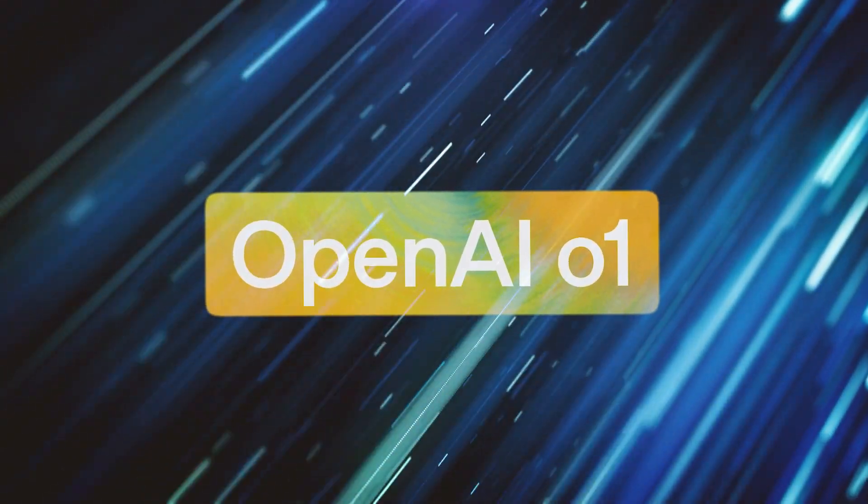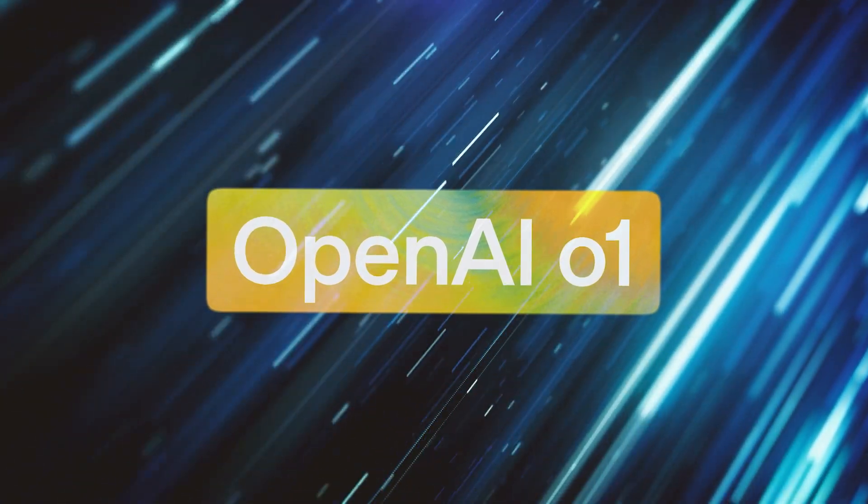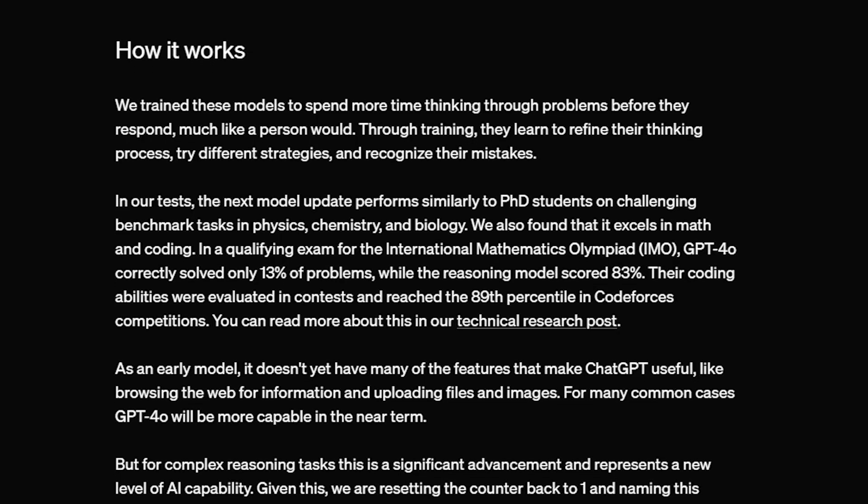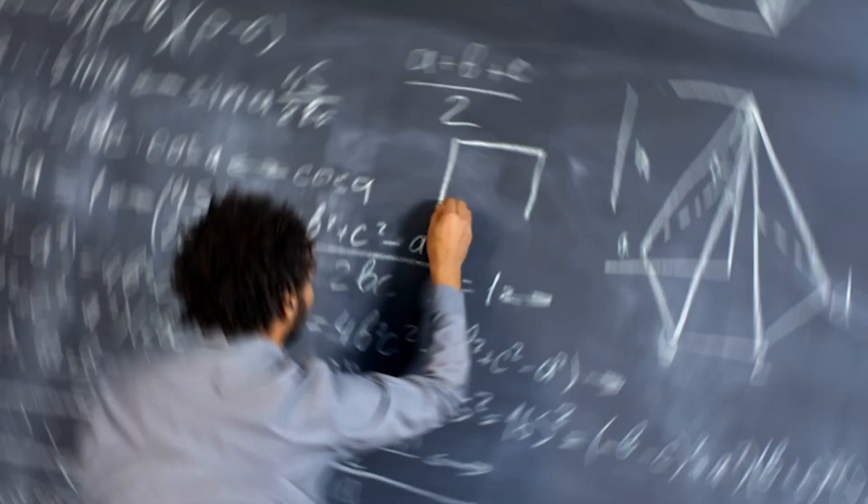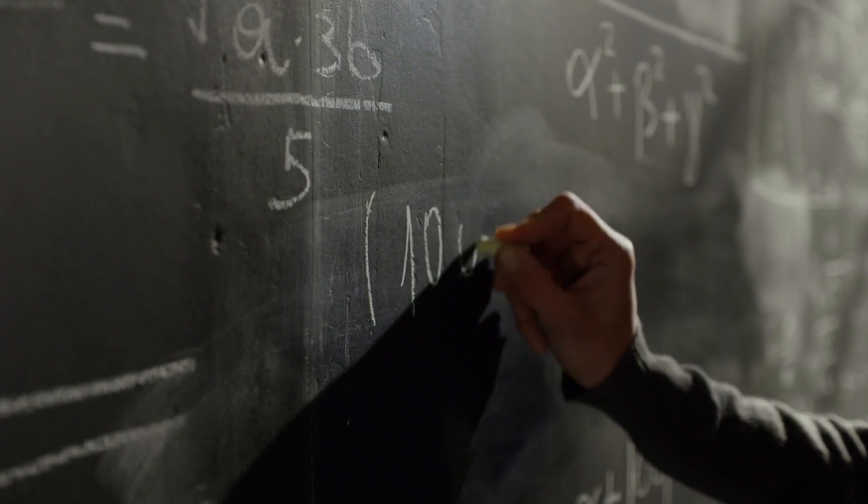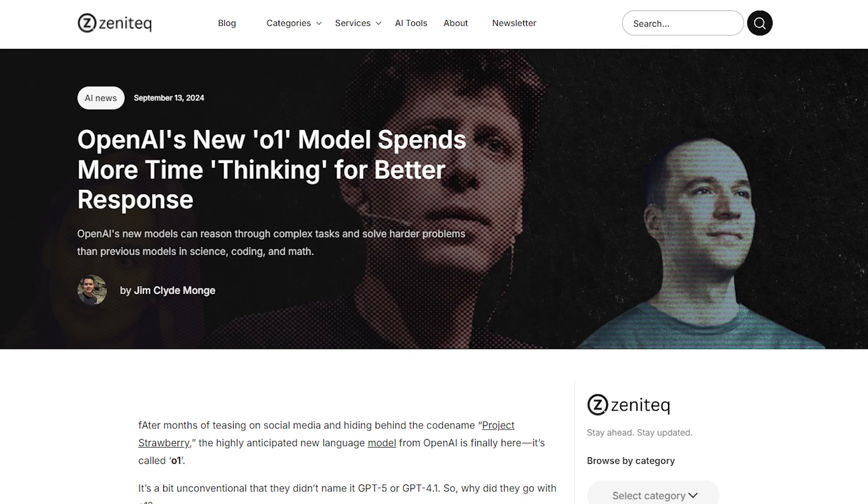So how does GPT-01 do it? How does it actually think before responding? Well, it's not magic. OpenAI trained it to simulate a human thought process. Think of it like a person solving a challenging problem: starting with an idea, trying different approaches, and recognizing when something's off. It will take time to make sure what it tells you is as accurate as possible.